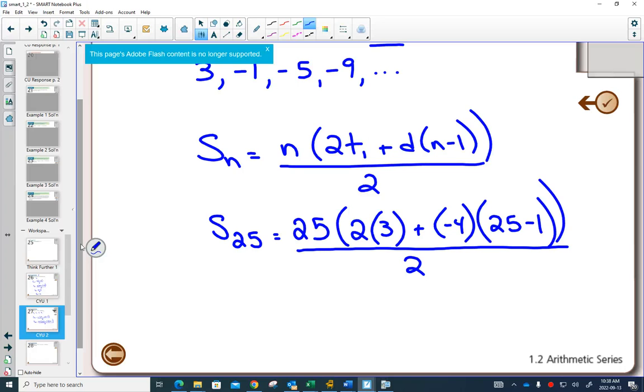Anyways, if we do this mental math, order of operations, I'll do the brackets first here. I'm going to get 6, negative 4 minus 24, minus 96, all divided by 2.